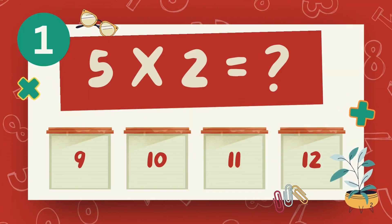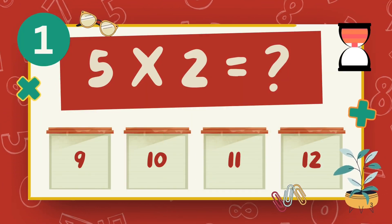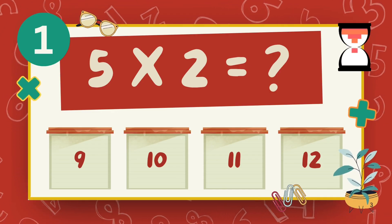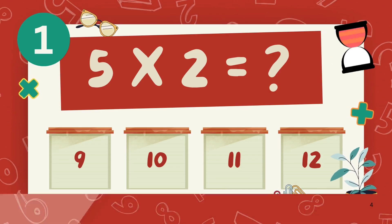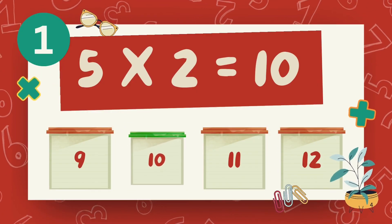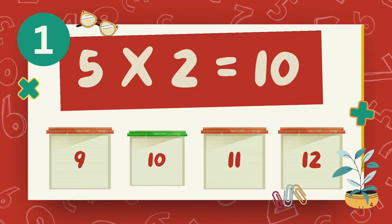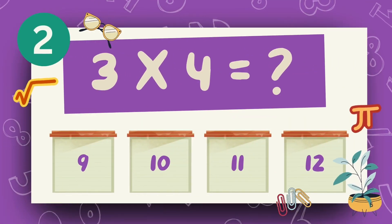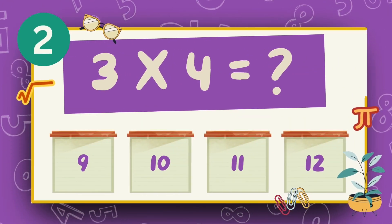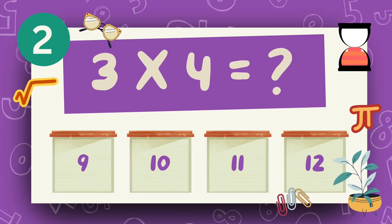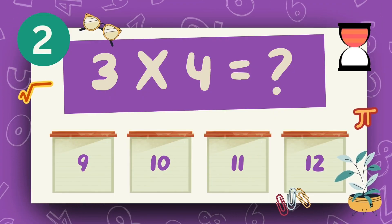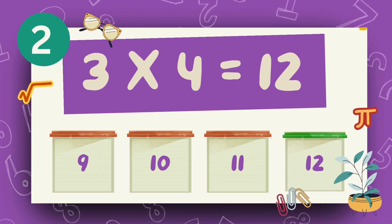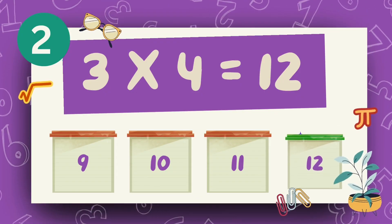What is 5 multiply 2? The answer is 10. What is 3 multiply 4? The answer is 12.